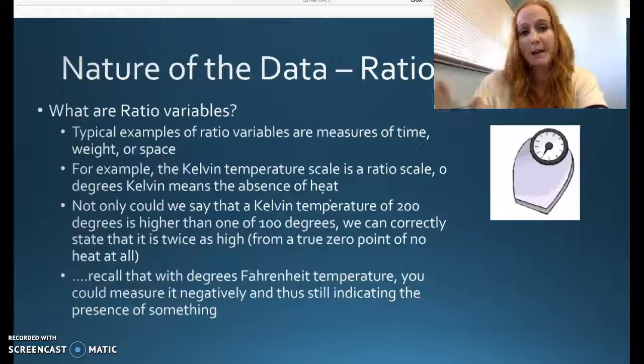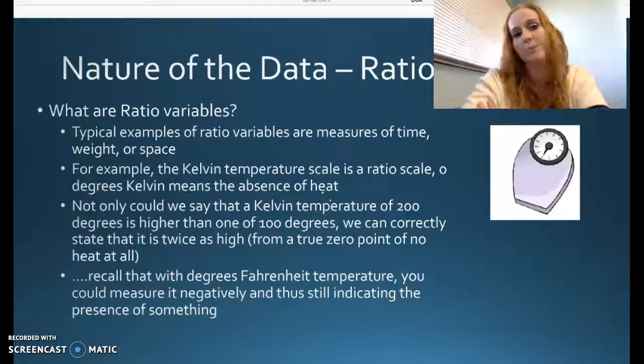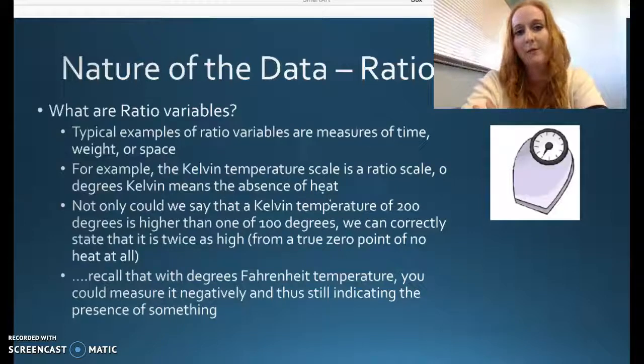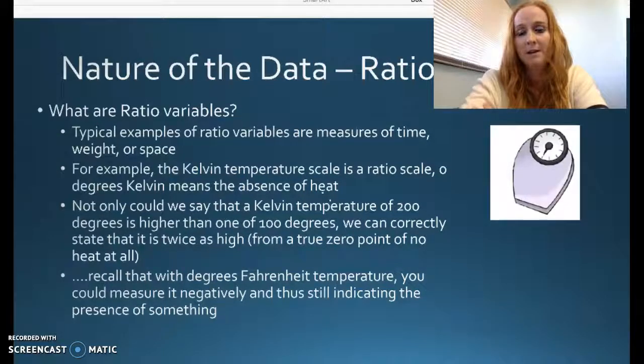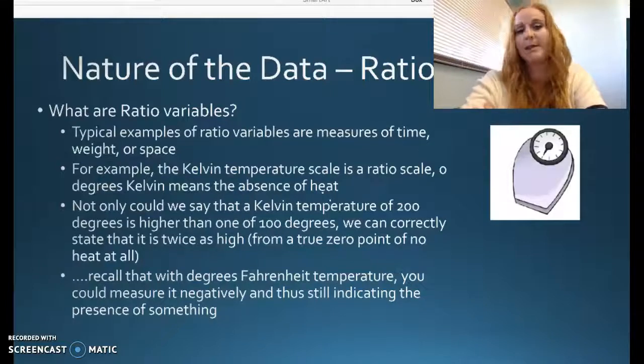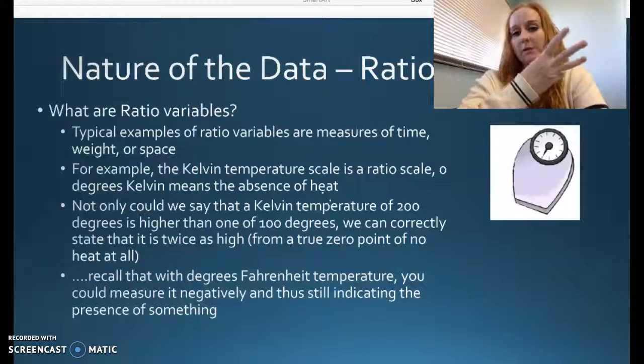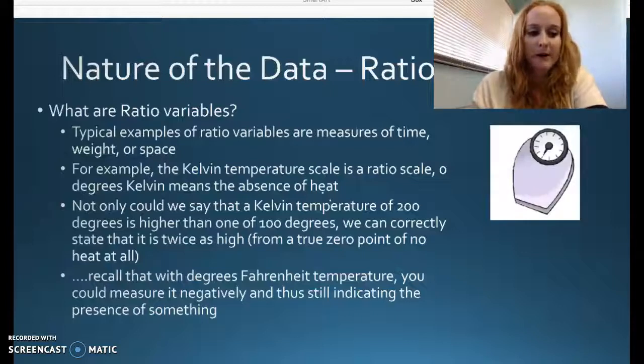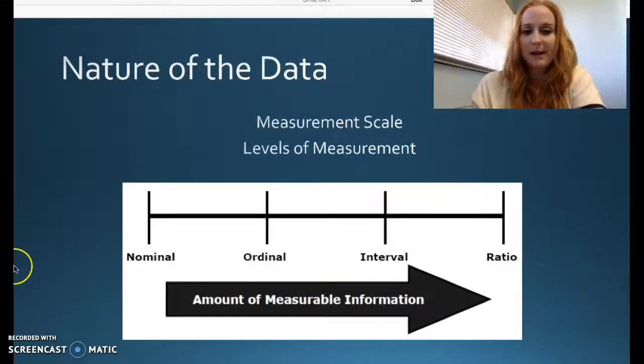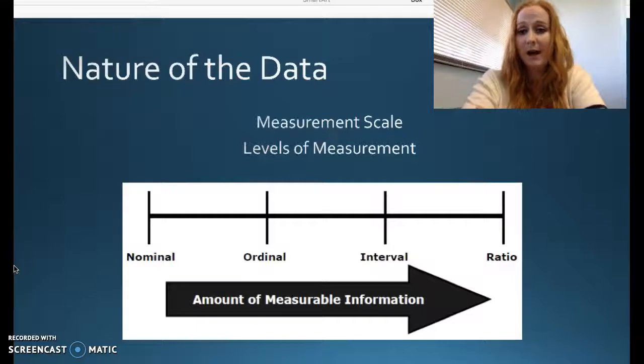You'll hear me say interval or ratio because they have all the same properties. They're numbers. We can quantify them. We often treat them the same. The three main ones you're going to see the most are nominal, ordinal, interval. Again, nature of the data gives you how much measurable information you have.